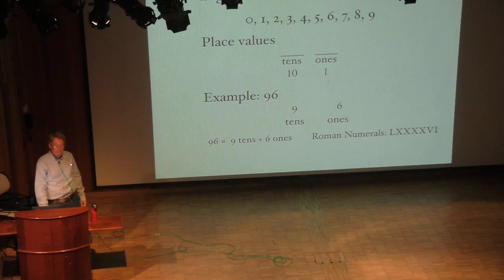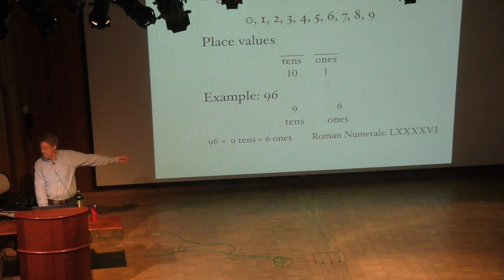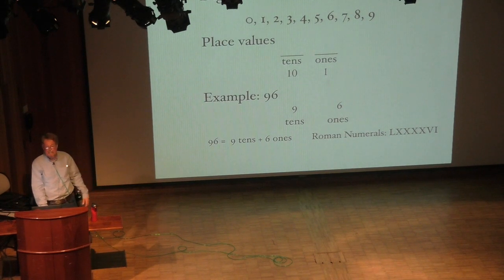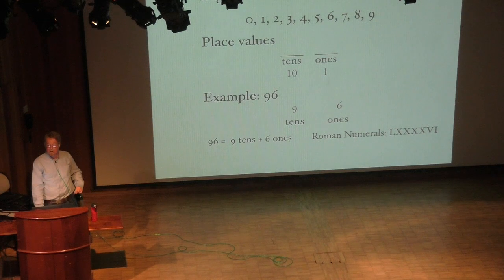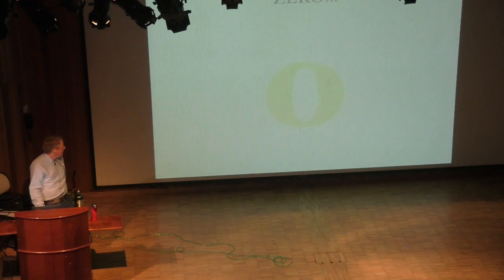One of the things the Romans didn't have was a zero. What would be the point? But we need it — otherwise, how can I tell the difference between 96 and 960, or 906? I need it to hold that position. Zero is a big deal. In fact, it's a very uncommon idea. There are only three ancient cultures that developed zero: the Sumerians, the Babylonians, and the Maya. The Hindu developed it later, and then it spread to Europe, but it wasn't in common use in Europe until the 1500s.